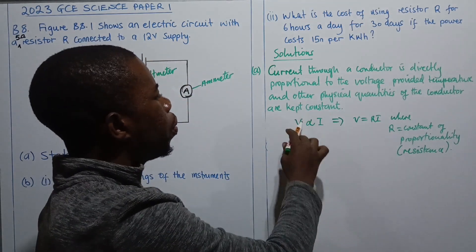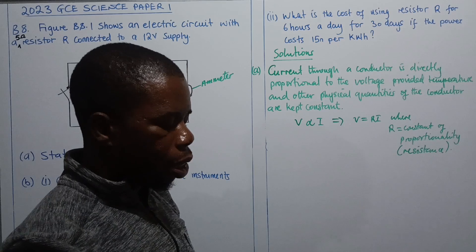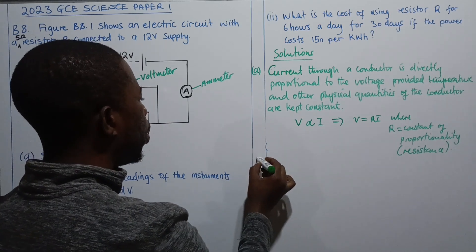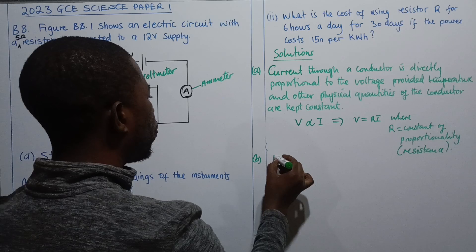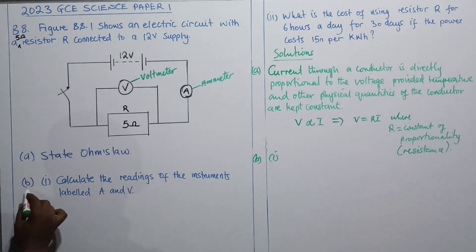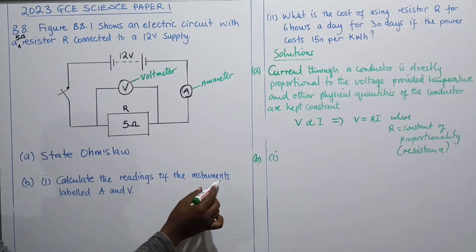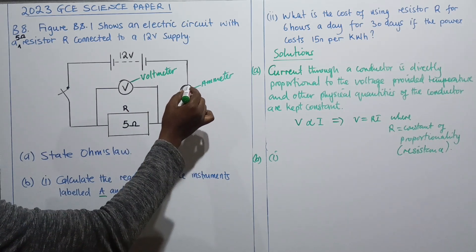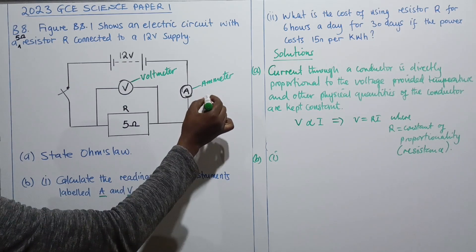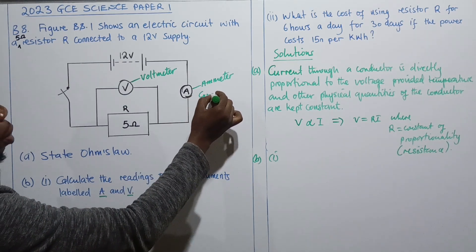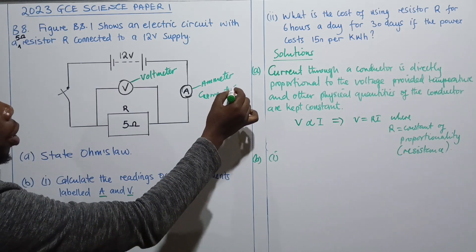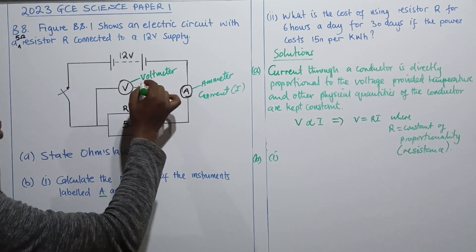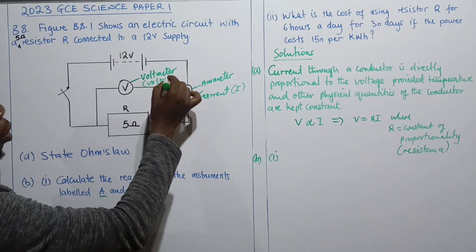This gives us the equation V = IR, where R is the constant of proportionality and stands for the resistance of the conductor. This is Ohm's Law in equation form. Moving to question B part one: calculate the readings of the instruments labeled A (ammeter, measuring current) and V (voltmeter, measuring voltage).